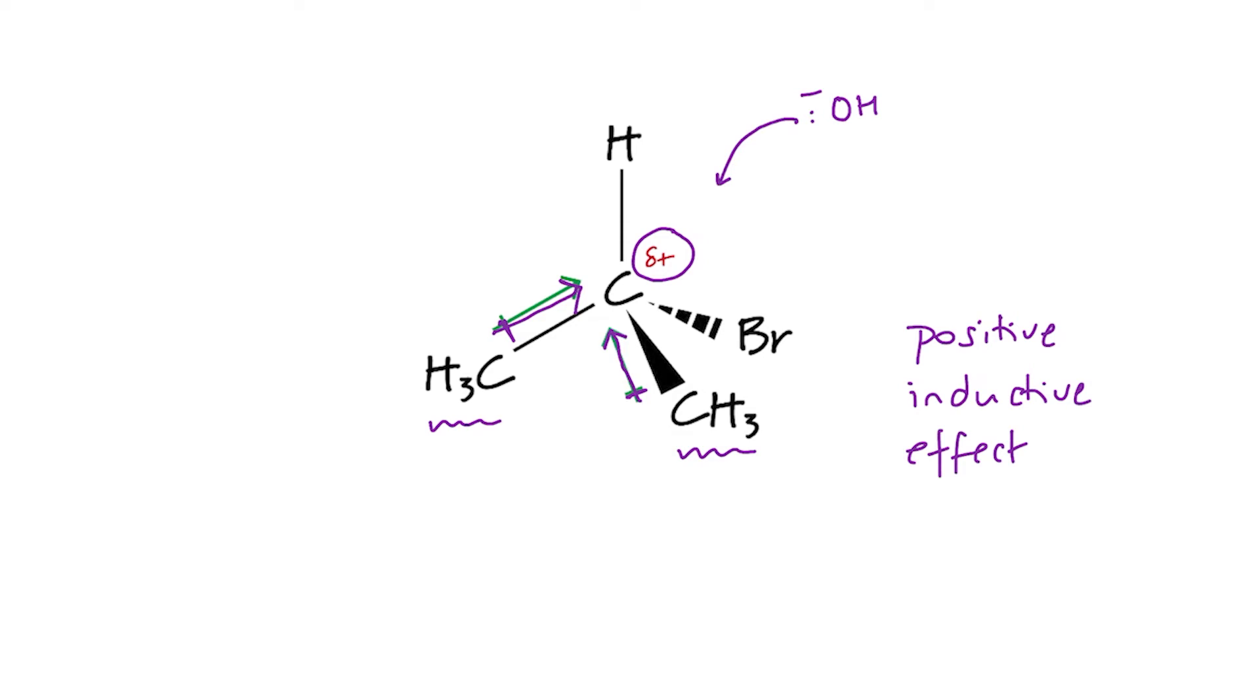Now, you might think, and quite naturally so, that if secondary haloalkanes are less reactive than primary, then tertiary are going to be the least reactive for all the reasons we've just talked about. However, that's not the case. Because as a result of this overcrowded transition state and the steric hindrance and the positive inductive effect of the alkyl groups, tertiary haloalkanes choose to react by a different type of nucleophilic substitution. And that different type of nucleophilic substitution is known as SN1.